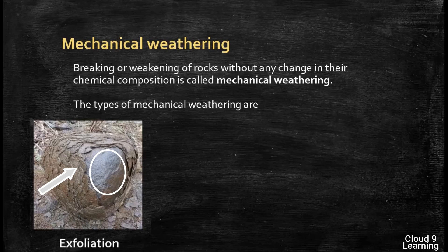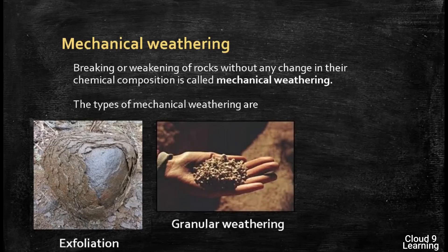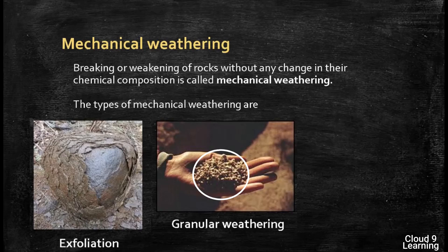The second type by which mechanical weathering takes place is granular weathering. As the name indicates, the rocks are broken down into small granules. These rocks are formed because of pressure on the agglomeration of sand particles. When water penetrates such rocks, the particles get loose and separate from each other, as shown in this picture. This process is called granular weathering.